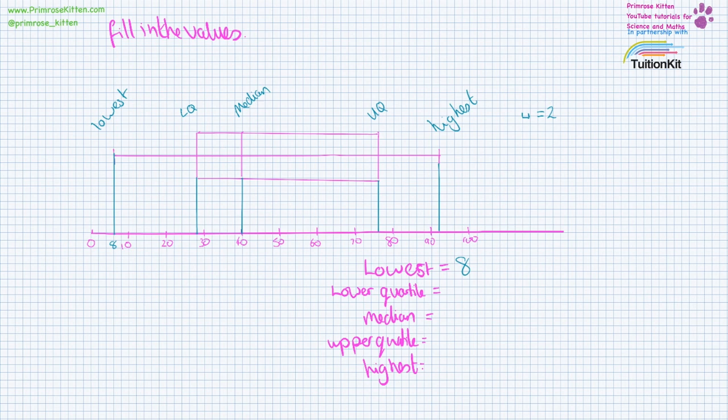The lower quartile is 20, 22, 24, 26, 28. The median lands on 40.